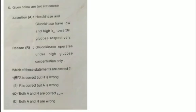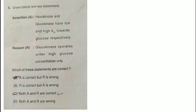So now the reason is correct. A is correct and R is also correct. The third option B states R is correct but A is wrong — that is not the case. If both R and A are correct, then the right option is C. Both A and R are correct — that is the right option.